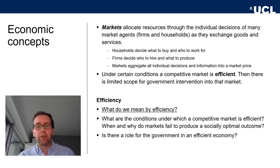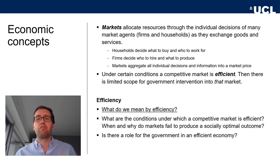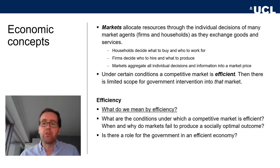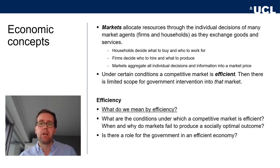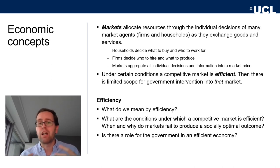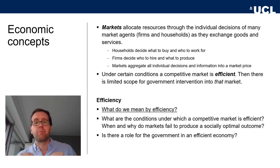Markets, then, allocate resources — that's their purpose. They do so based on the individual decisions of many agents: firms on one hand and households on the other, as they exchange goods and services. Households decide what to buy and who to work for; firms decide who to hire, what technology to invest in, and what to produce. Markets aggregate all this information and individual decisions into a market price. Under certain conditions, a competitive market with these features is efficient, and if a market is efficient, there's very limited scope for government intervention.